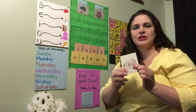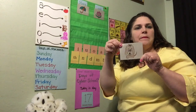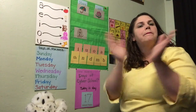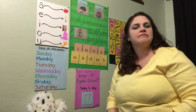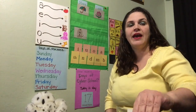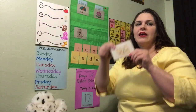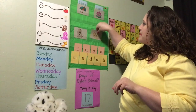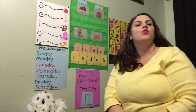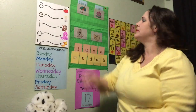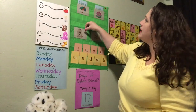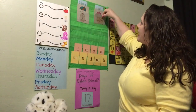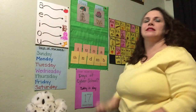Our next picture card: puppy. Let's clap that out. Puppy — two syllables. And cat. Let's clap that out. Cat — one syllable. Puppy had more, cat had less.